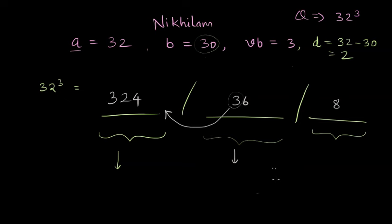So in the middle part we won't have 36 but we will simply have 6 and this 3 will flow towards left and this will be 324 plus 3 and we won't have this 3.